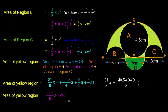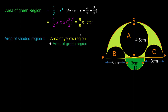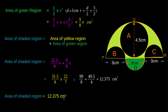The area of the green region is equal to (1/2) π R². Here also, D is equal to 3, so R is equal to 3/2. Area of green region is equal to 9/8 π cm². Therefore, the area of the shaded region is equal to the area of yellow region plus the area of green region = 22.5/8 π + 9/8 π = 99/8, which simplifies to 49.5/4 = 12.375 cm². Therefore, the area of the shaded region is 12.375 cm².